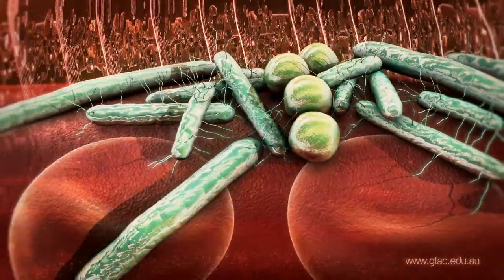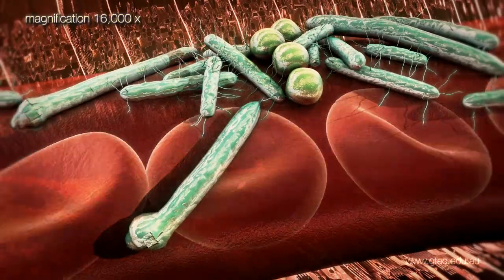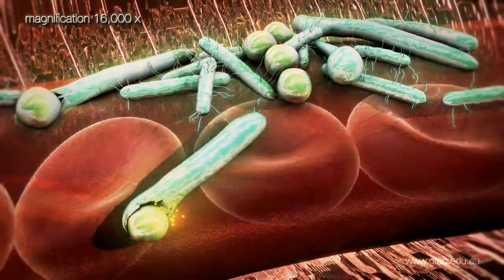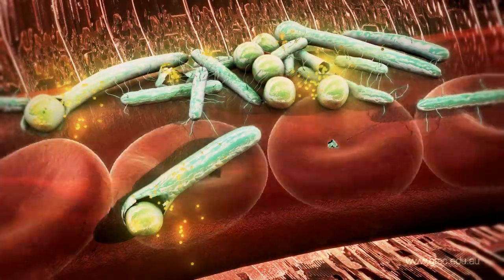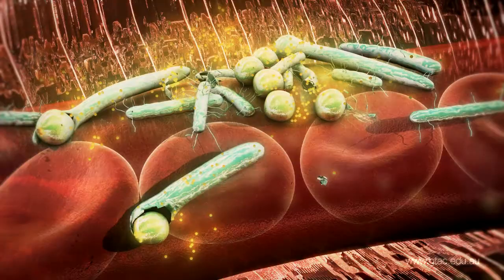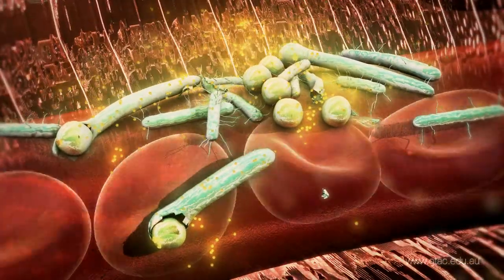Some bacterial cells develop spores at one end. The bacteria lyse, releasing these spores and more tetanospasmin toxin. Bacteria without spores can also lyse to release toxin. The toxin enters the bloodstream.